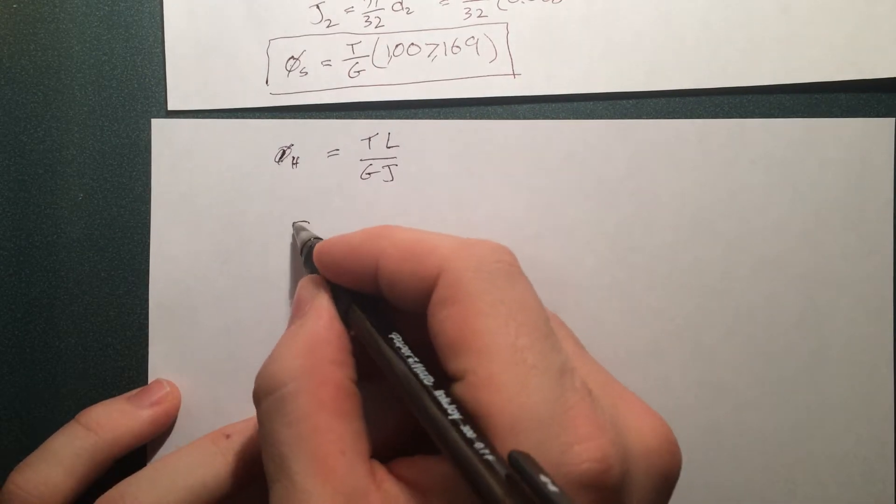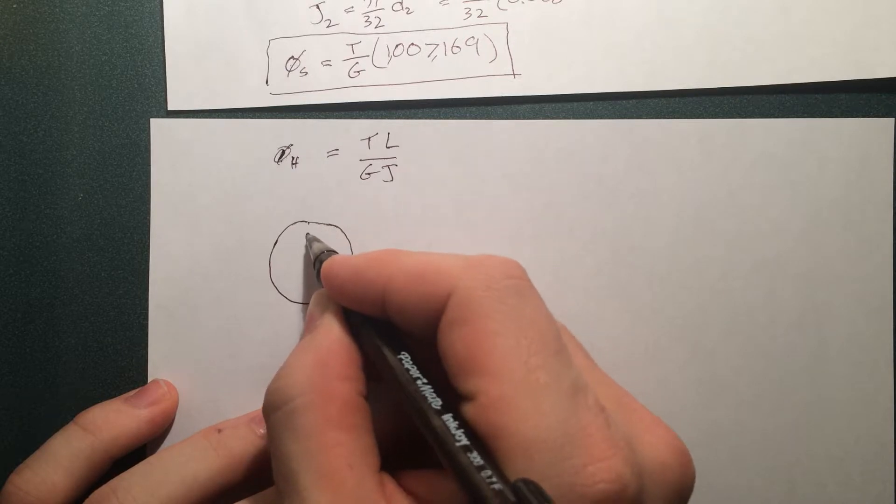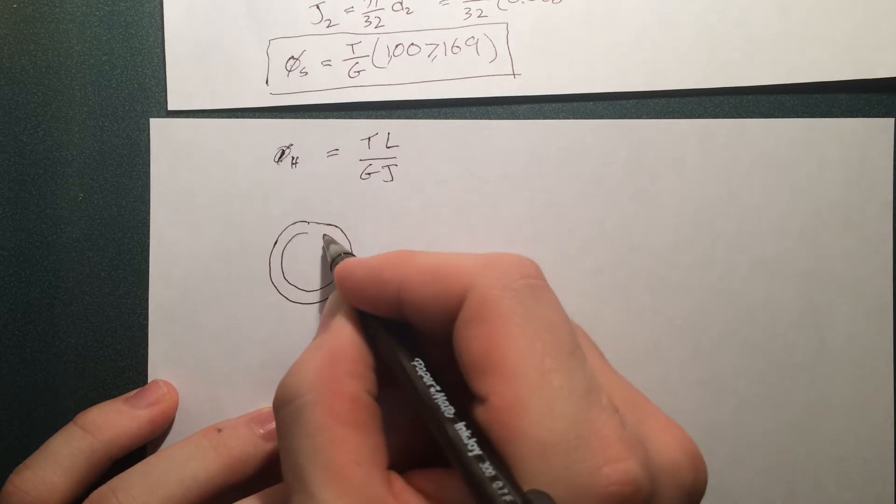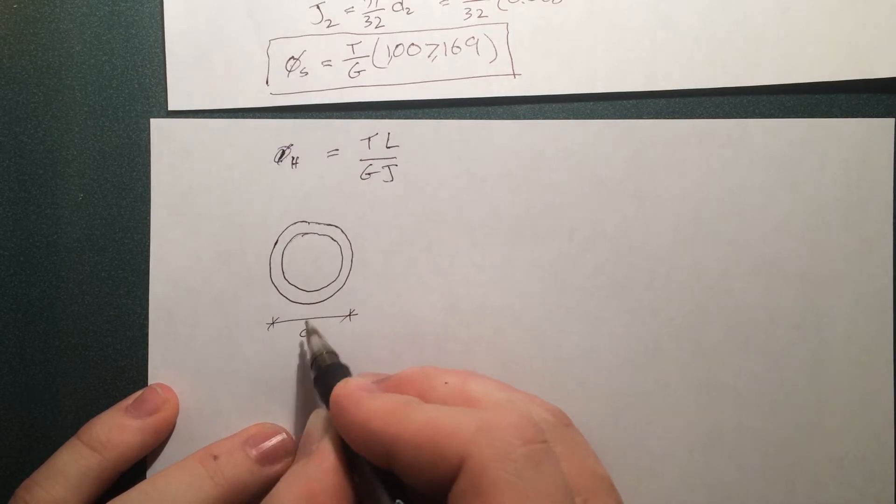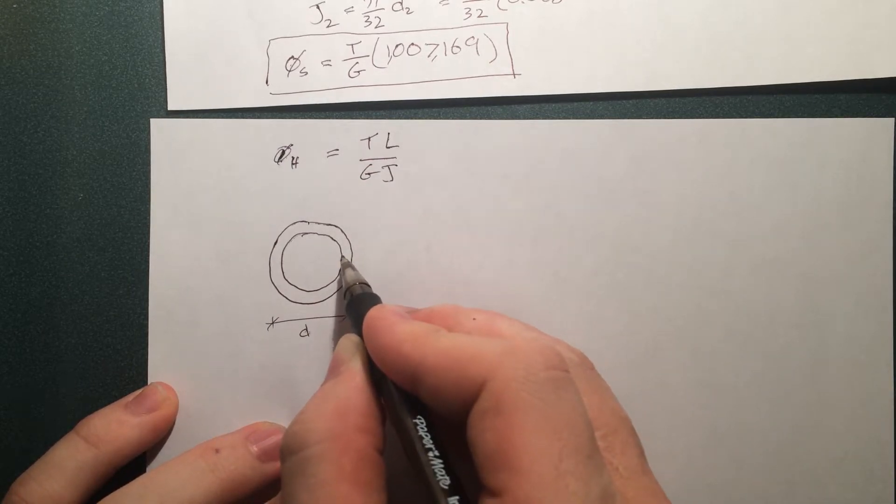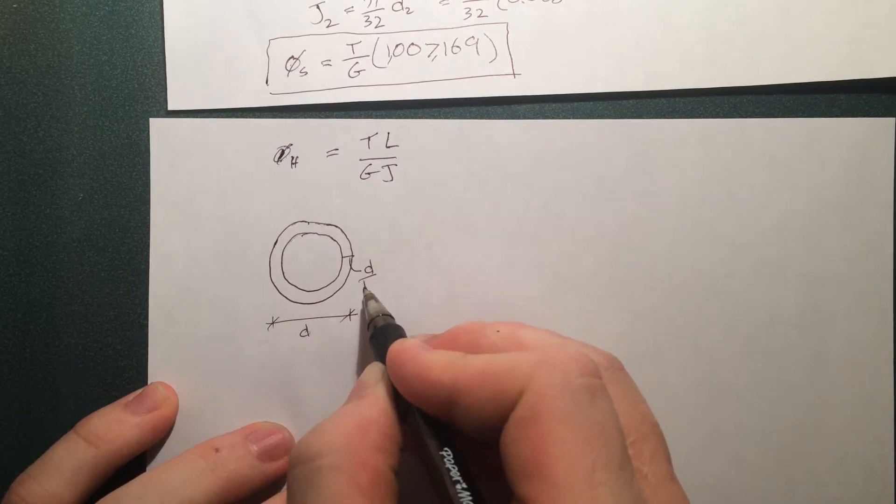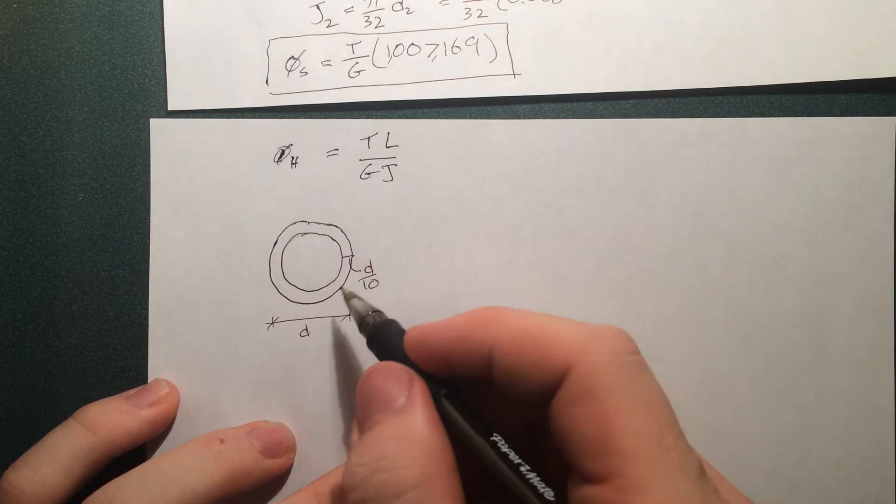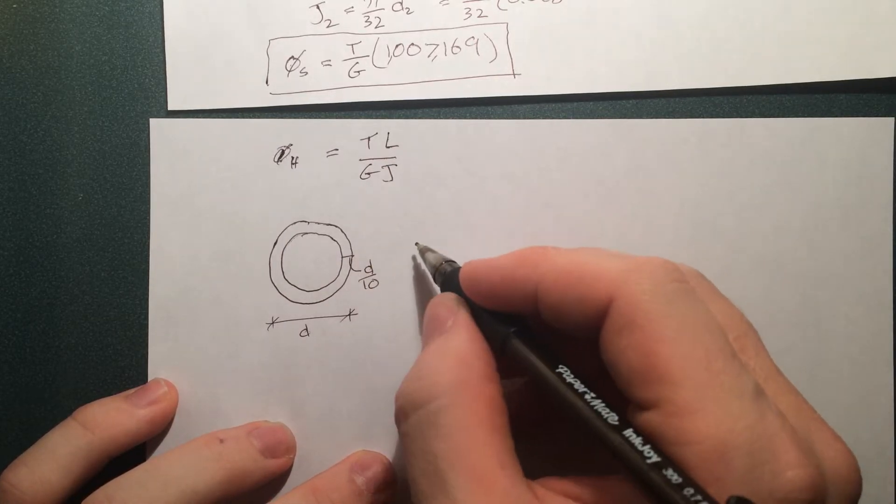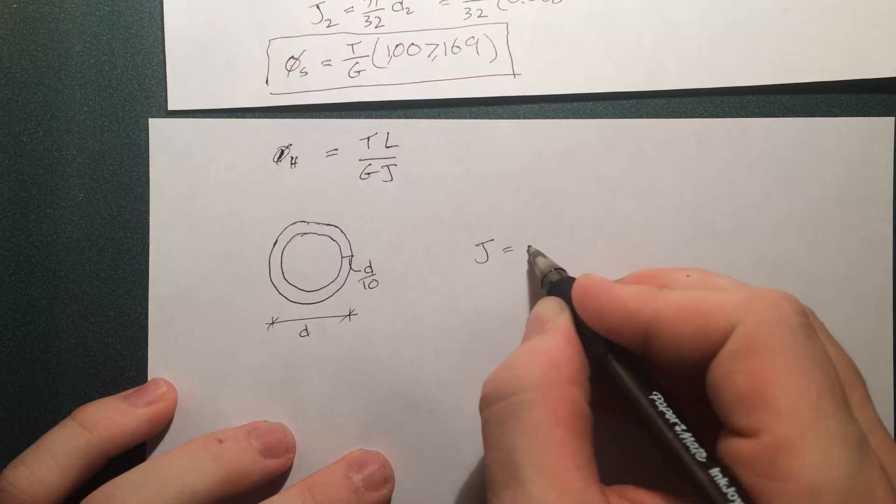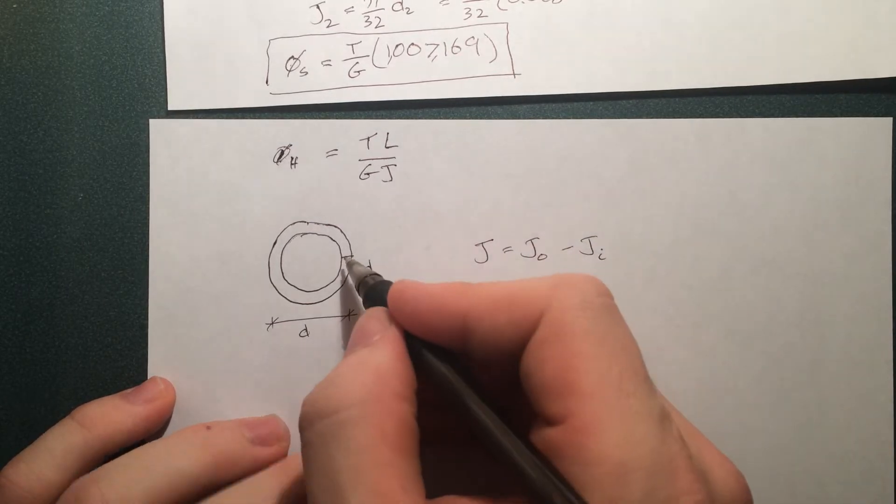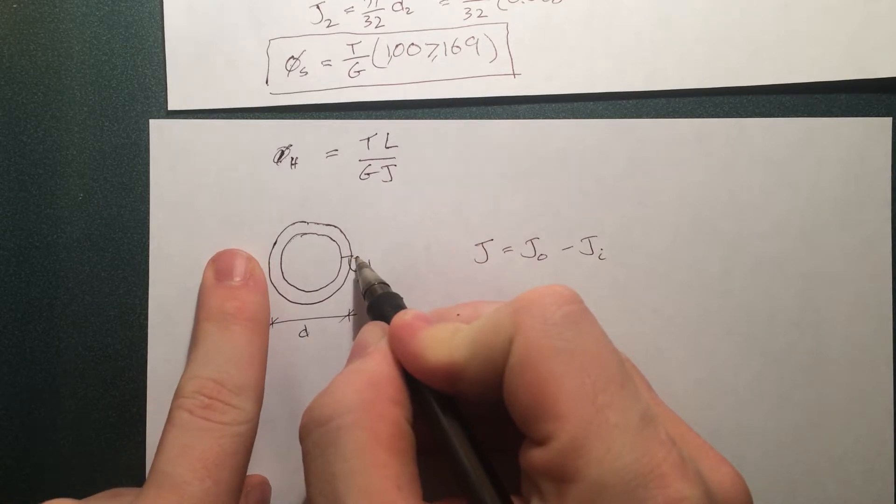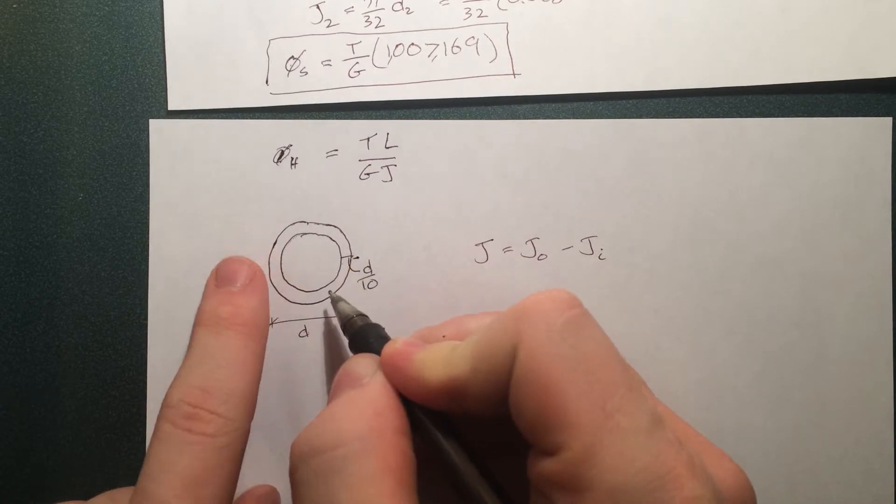So we have this circular section. We know the overall diameter is D and each one of these thicknesses here is D by 10. Okay so the moment of inertia of this the polar moment is basically the outer one minus the inner one by the outer one I mean this polar moment of inertia minus that polar moment of inertia.